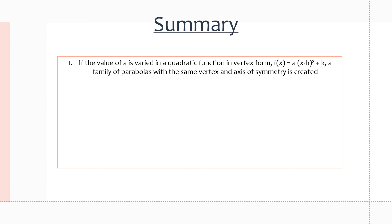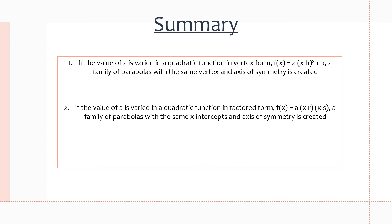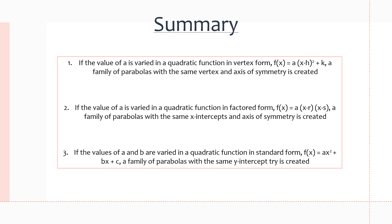A quick review of everything we discovered in this video. If the value of a is varied in vertex form, f(x) = a(x - h)² + k, a family of parabolas with the same vertex and axis of symmetry is created. If the value of a is varied in factored form, f(x) = a(x - r)(x - s), a family of parabolas with the same x-intercepts and axis of symmetry is created. If the values a and b are varied in standard form, f(x) = ax² + bx + c, a family of parabolas with the same y-intercept is created.